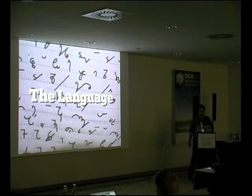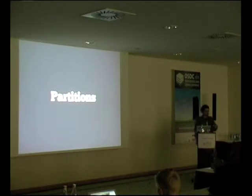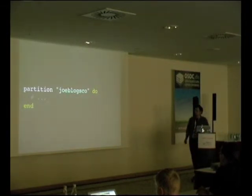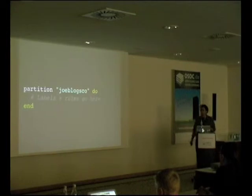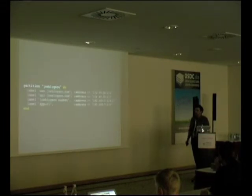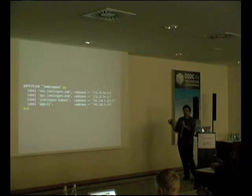Let's look more closely at what RIPT does and look at the language. At the very core you have a concept called a petition, which is a grouping of rules. Petitions are named. Within a petition you have two types of things: labels and rules.